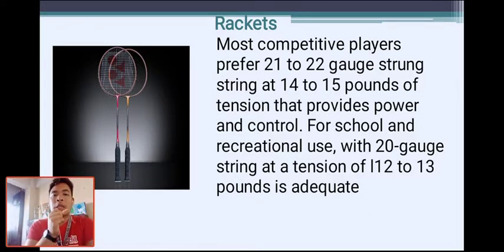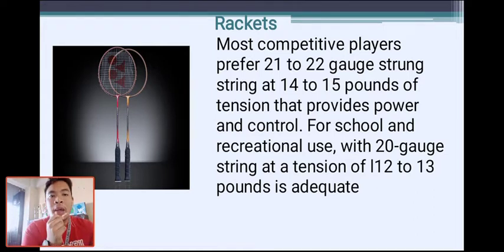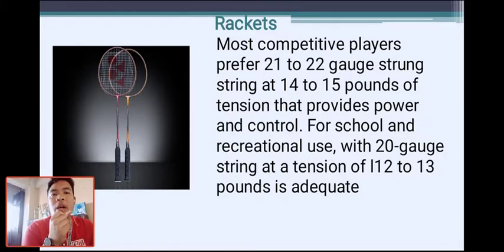For school and recreational use, a 20 gauge string at a tension of 12 to 13 pounds is adequate. It is better to use a lighter racket so it is flexible and easy to use during play.